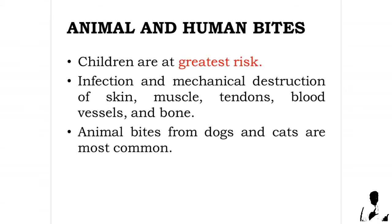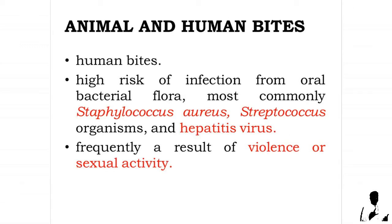Animal and human bites: children are at greatest risk. The most significant problems associated with animal bites are infection and mechanical destruction of skin, muscle, tendons, blood vessels, and bone. The bite may cause a simple laceration or be associated with crush injury, puncture wound, or tearing of multiple layers of tissue. Animal bites from dogs and cats are most common. Human bites also cause puncture wounds or lacerations, carry a high risk of infection from oral bacterial flora — most commonly Staphylococcus aureus, Streptococcus organisms, and hepatitis virus. Hands, fingers, nose, vagina, and penis are the most common sites of human bites, frequently a result of violence or sexual activity.